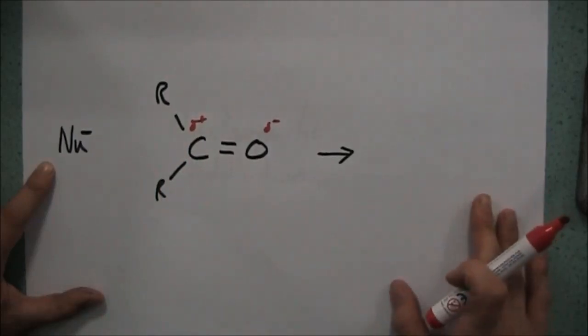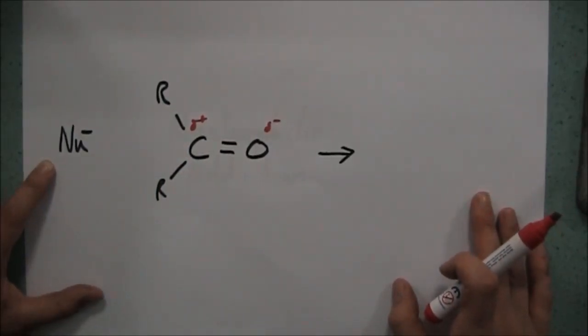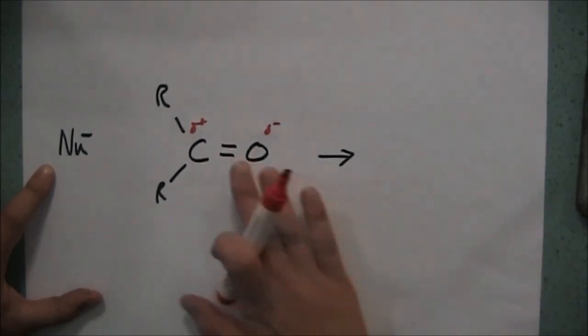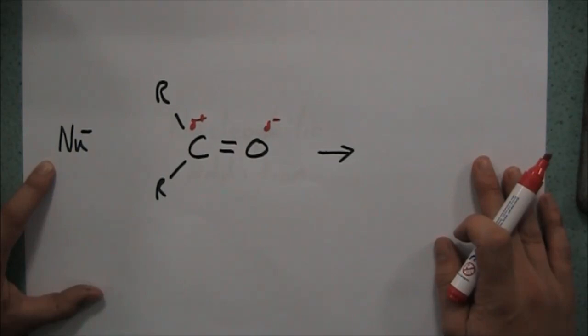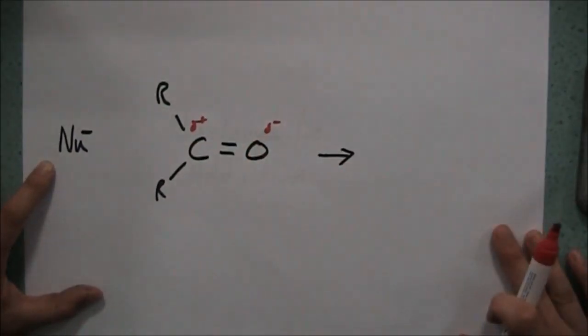Now wherever we have a delta plus we can have a reaction with a nucleophile, and if you remember nucleophilic substitution, we achieved that previously with a chlorine atom bonded to a carbon atom with a single bond, but now we have a double bond, things are going to be slightly different.